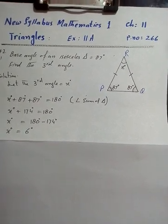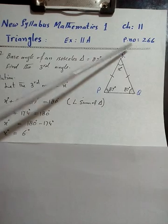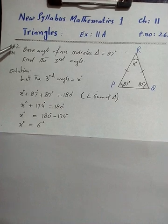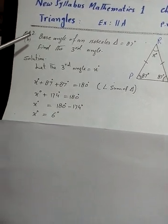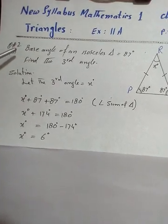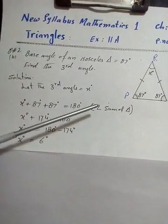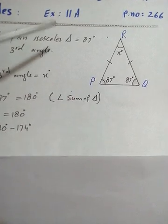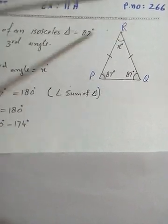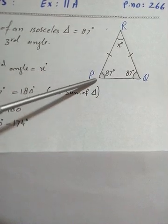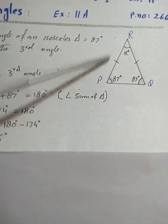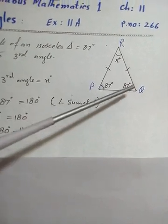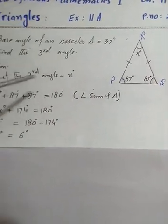Bismillah ar-rahman ar-rahim. Exercise 11A, page number 266, topic is triangles. In question number two, they have given the base angles of an isosceles triangle. We have discussed already about the types of triangles. In an isosceles triangle, two sides are equal. In triangle PQR, sides QR and PR are equal in length. The angle opposite to PR is Q, and the angle opposite to QR is P. These angles are known as base angles, and we have to find the third angle.